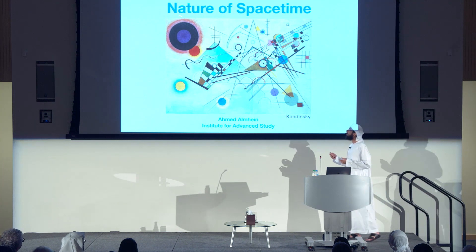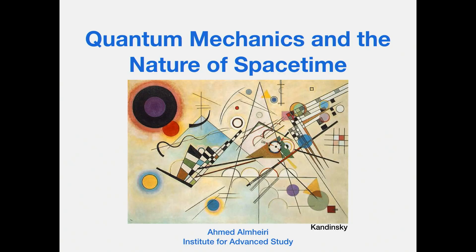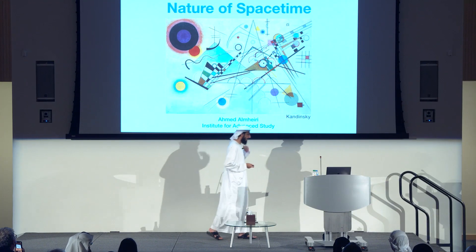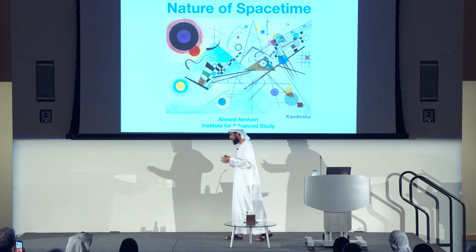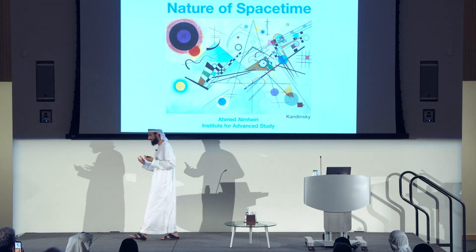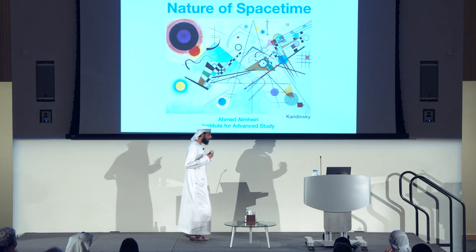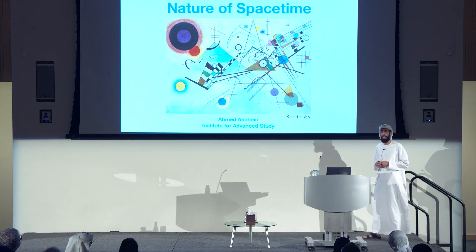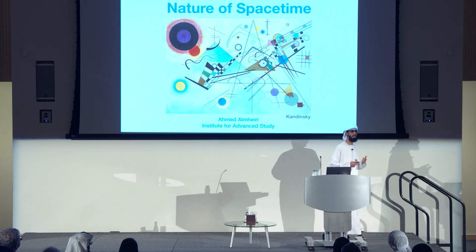I'm going to tell you about quantum mechanics and the nature of space time. It's a story about two of the major theories of the 20th century: quantum mechanics and Einstein's theory of general relativity, which describes space time, and how these different theories come together — or rather how we are trying to put them together. This brings to mind a piece by Kandinsky: a great example of how combining two different things gives you something more than the sum of its parts.